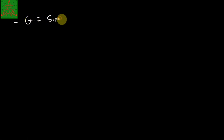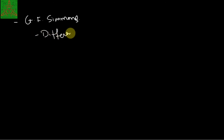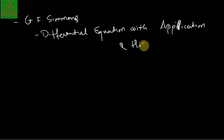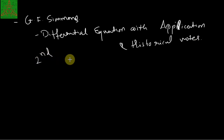The book we are following is by G.M. Simmons — the second edition. The title of the book is 'Differential Equations with Applications and Historical Notes.' It is published by McGraw-Hill Publications, second edition, published in 2008.